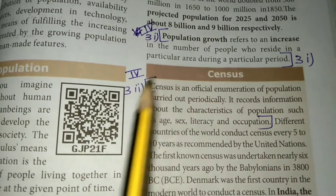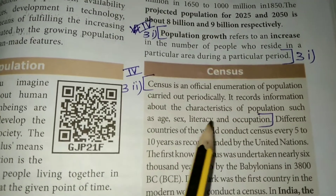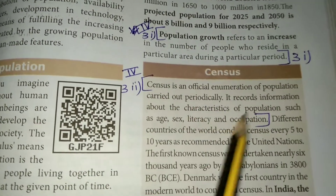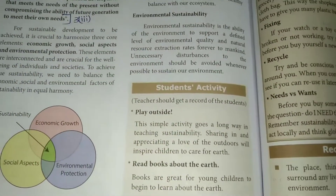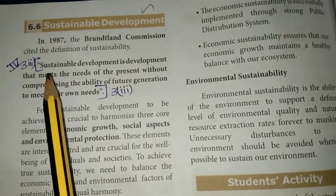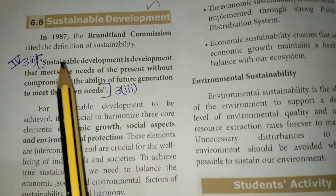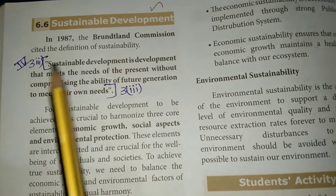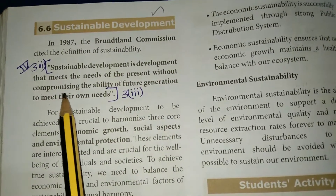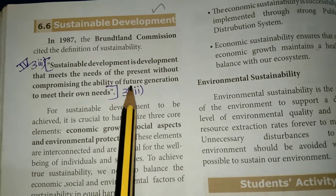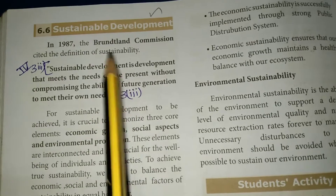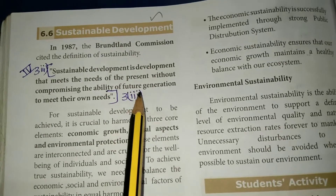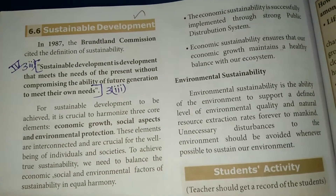For population growth, note the heading and mark the relevant lines. The sustainable development answer follows — mark the first three lines, then the conservation section starting from the last line. This covers the third question answer.